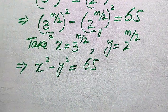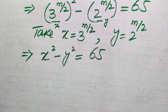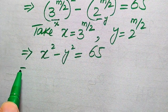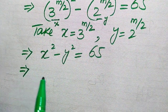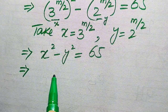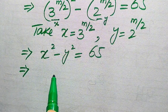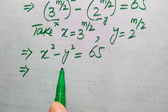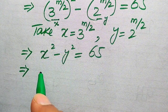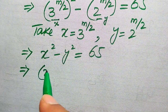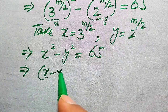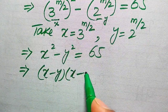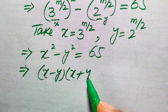In the left-hand side we have the famous algebraic formula: x squared minus y squared equals x minus y times x plus y, equals 65. So on the left-hand side we have two factors multiplied together, while on the right-hand side we have only one value.